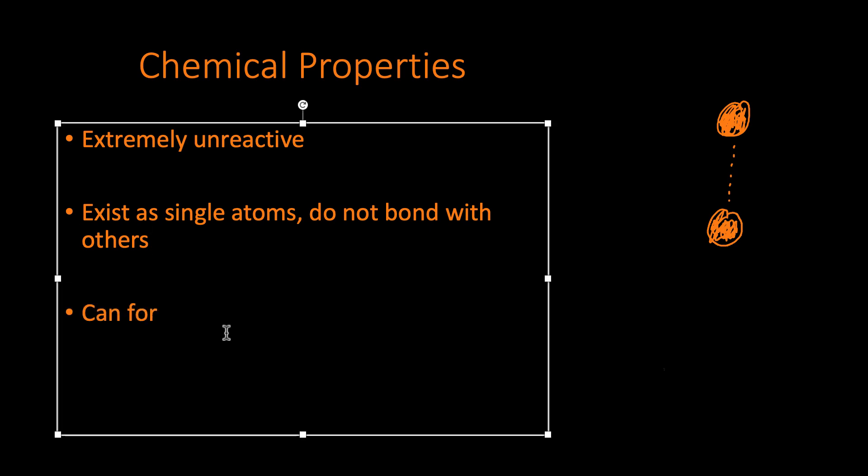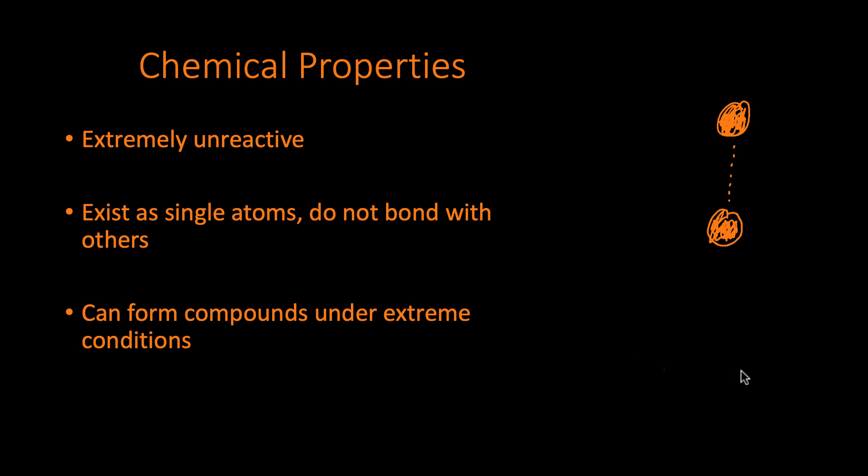I'll just put a side note here: they can form compounds under extreme conditions. So under extreme conditions we actually have produced compounds of the noble gases, but that's because we're supplying so much energy that we're forcing those atoms to become unstable and therefore bond with something else. But under any kind of normal conditions, they are very unreactive and they're not going to form any compounds with anything else.